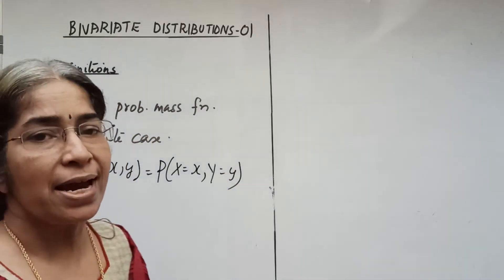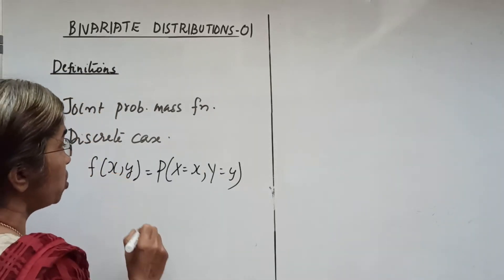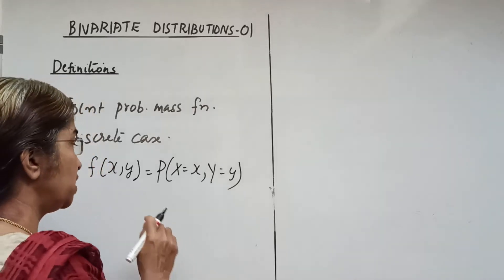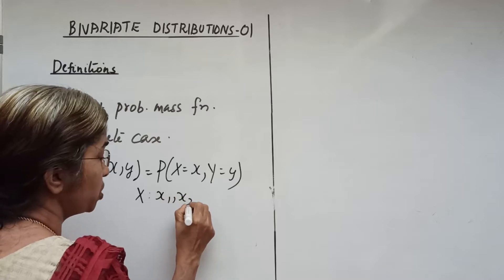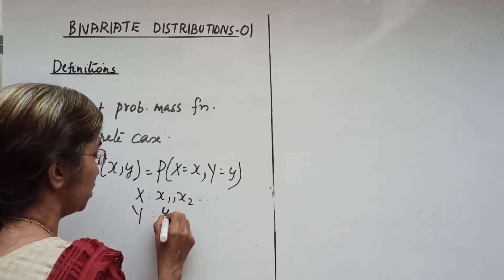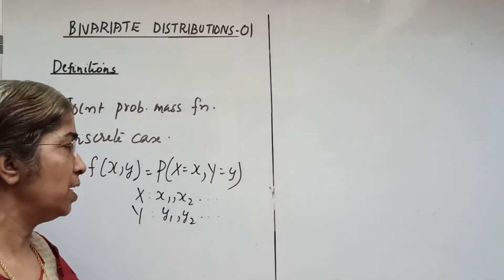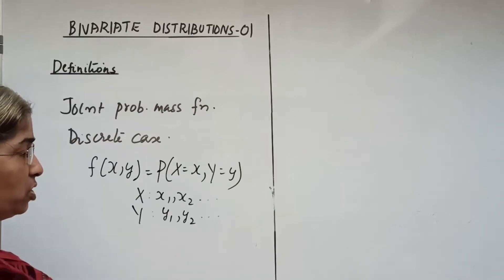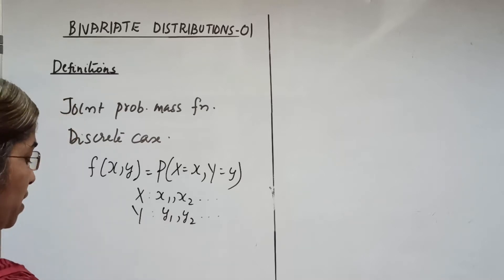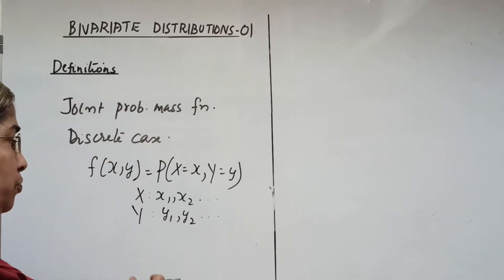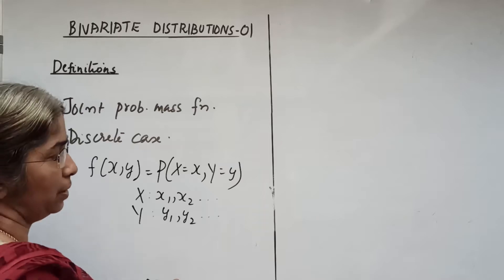The probability that x equals x and y equals y simultaneously is called the joint probability mass function of x and y, where x takes the values x1, x2, etc. and y takes the values y1, y2, etc. f of x y gives the probability that x equals x and simultaneously y equals y.